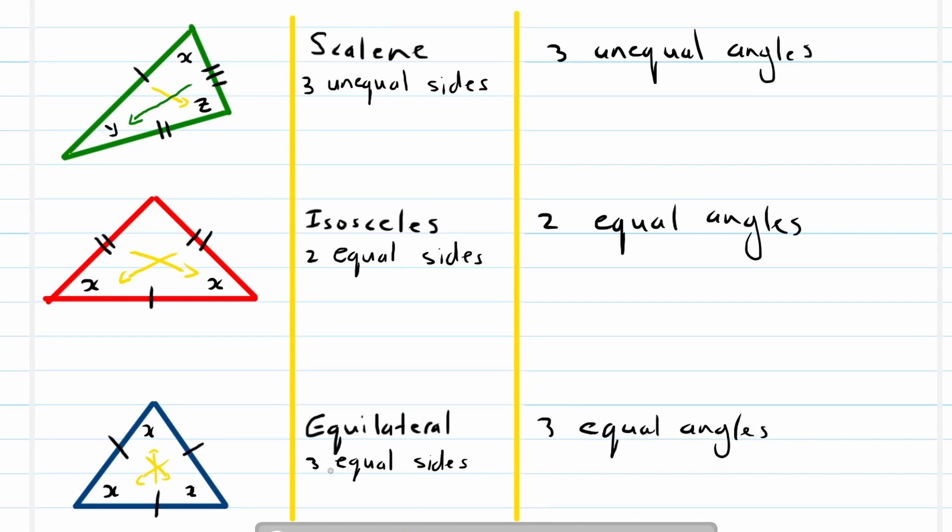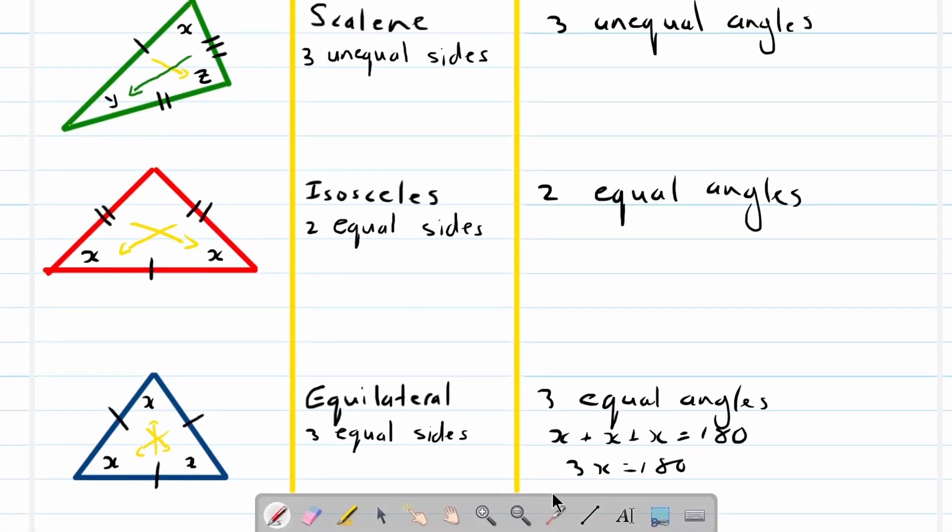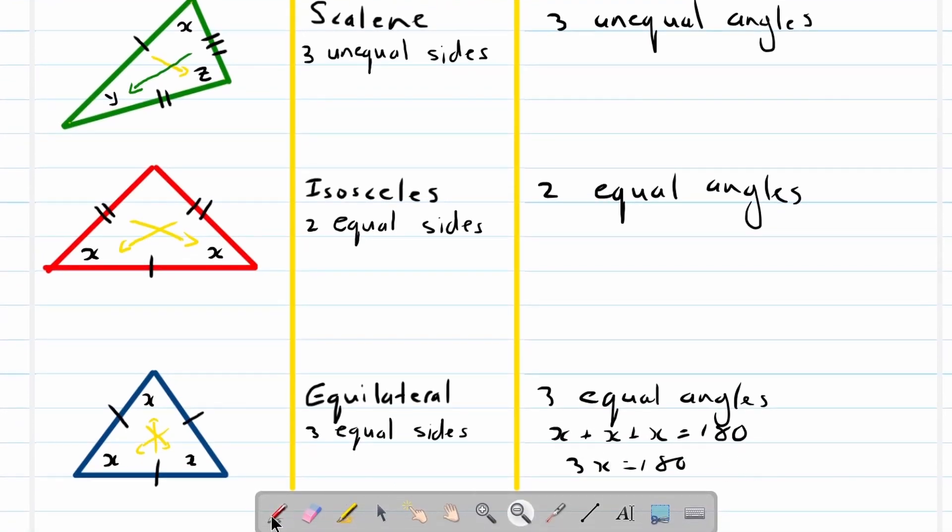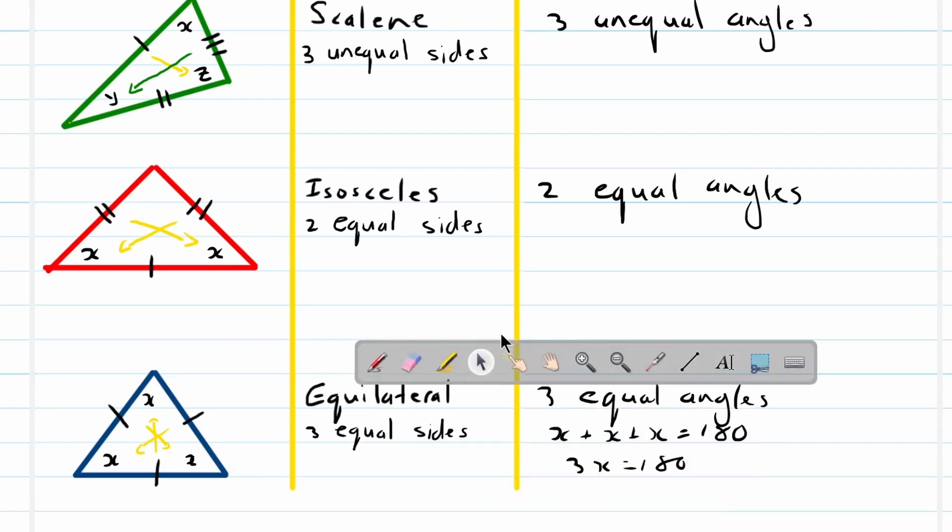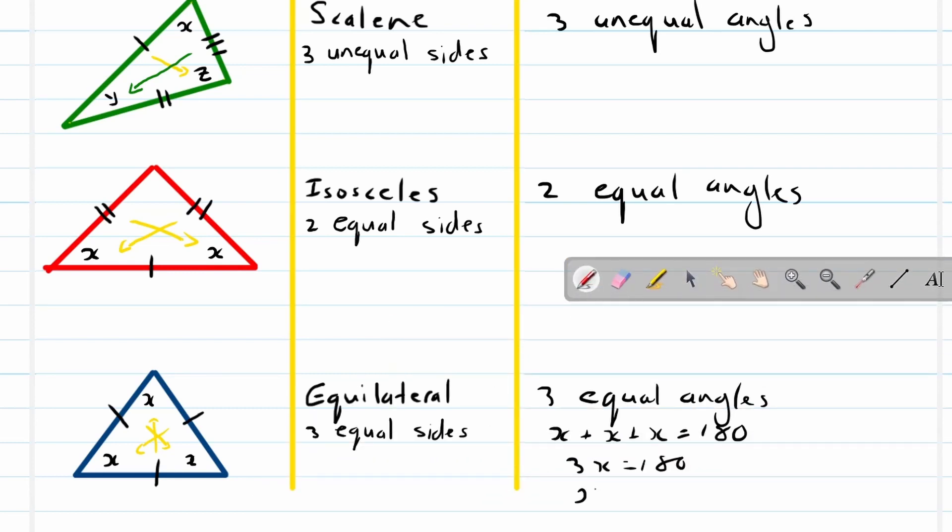And important here, if these three angles are equal, like in this case, x plus x plus x, the interior angles of a triangle is equal to 180. Therefore, three x will be equal to 180, and therefore x will always, in this case, be equal to 60 degrees. Equilateral triangle will always have its angles equal to 60 degrees. That's something to remember, very important.